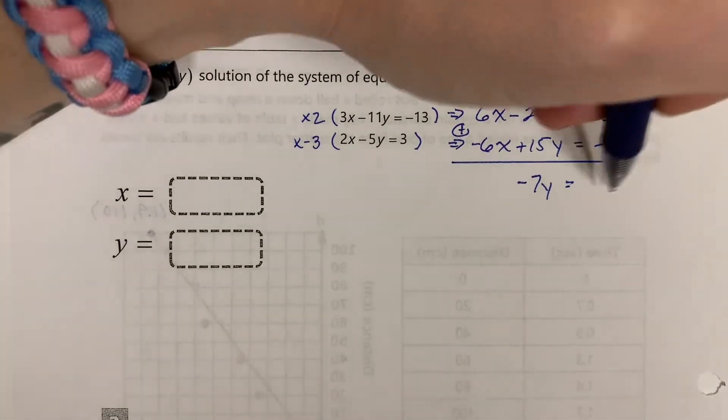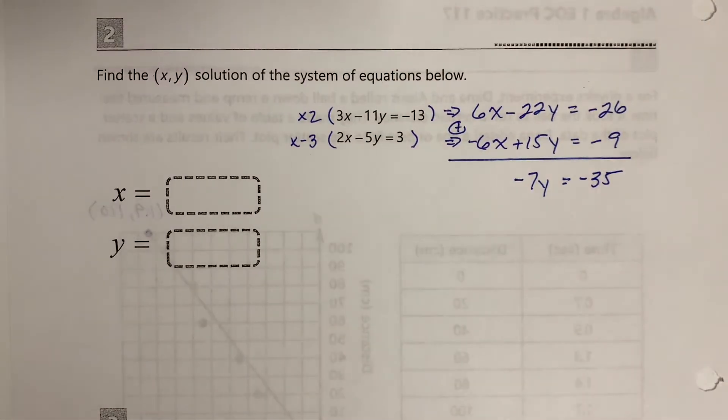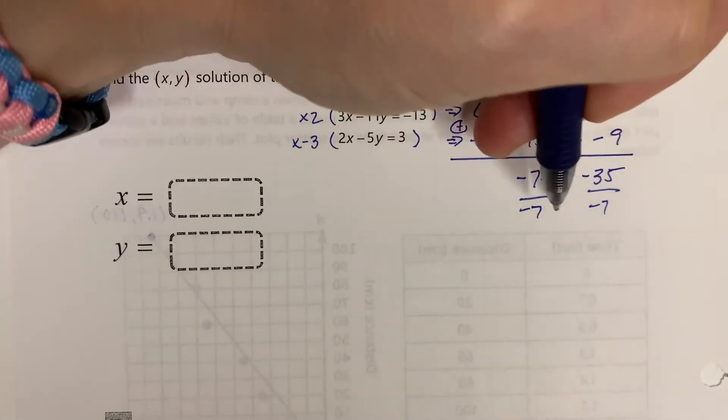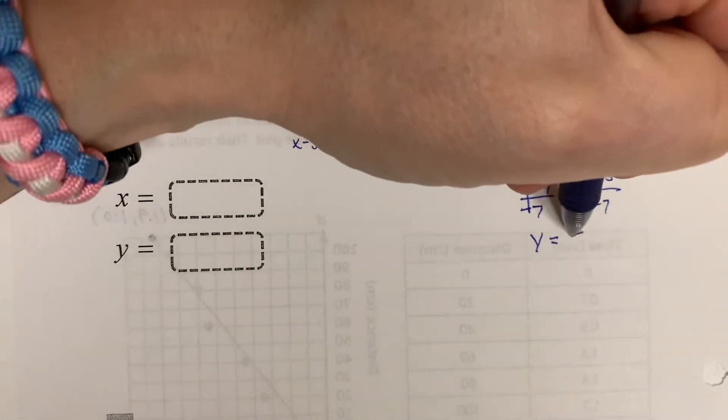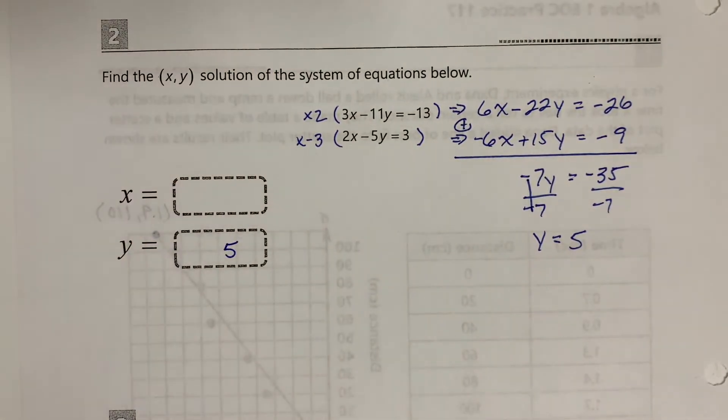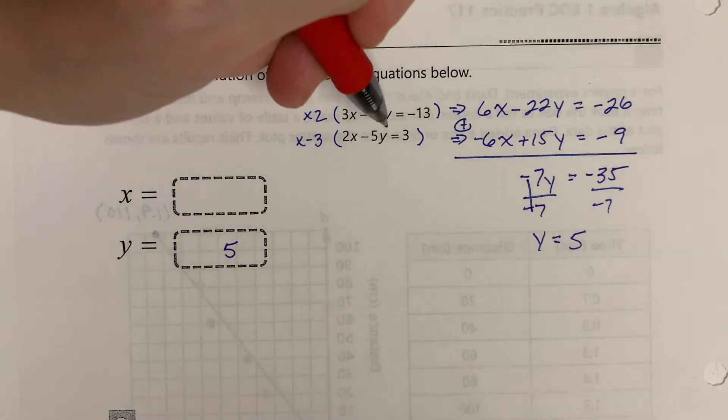Divided by negative 7, we have y equals positive 5, which is great. So I know my y value is 5. I've got to now plug that back in to one of my original equations to get the x value, and so I'll plug it into the bottom one.